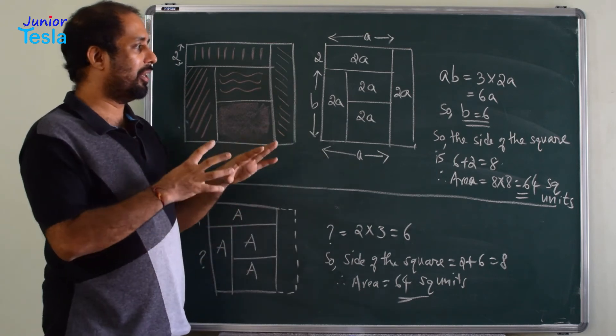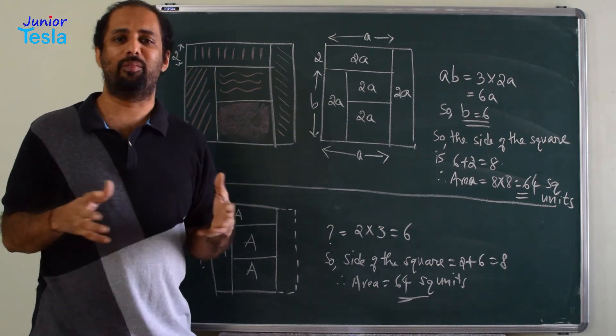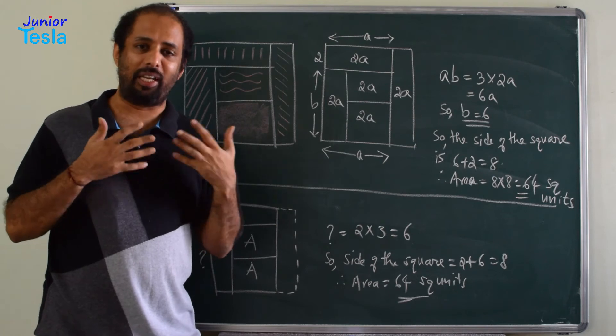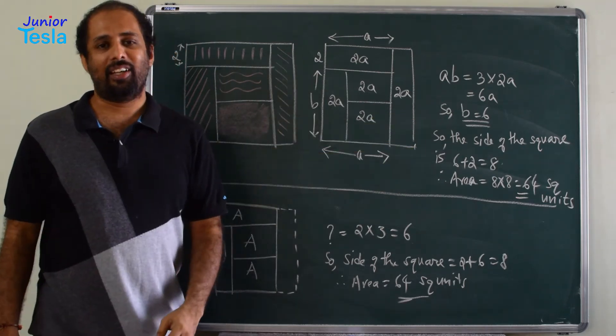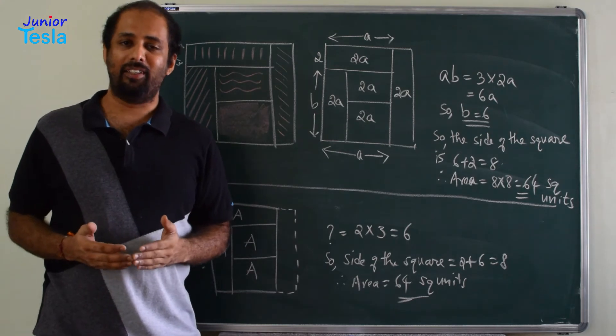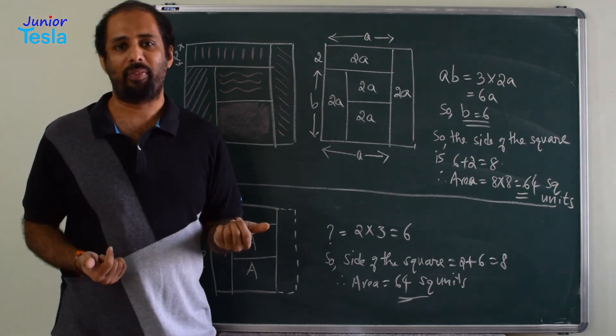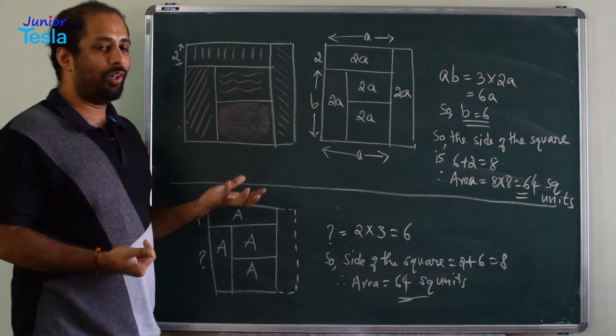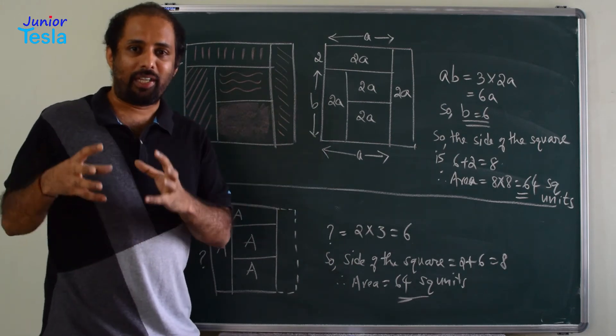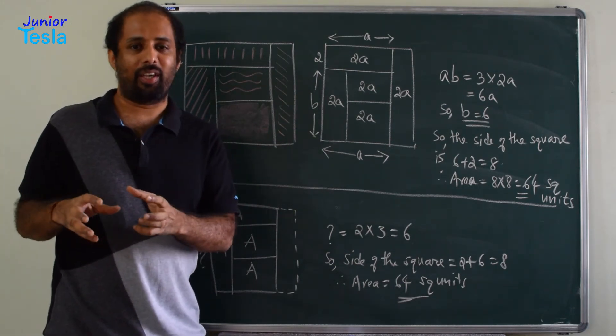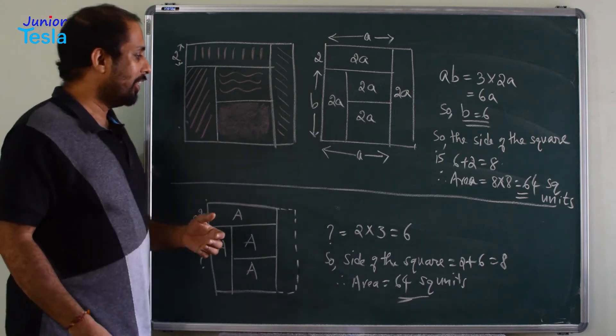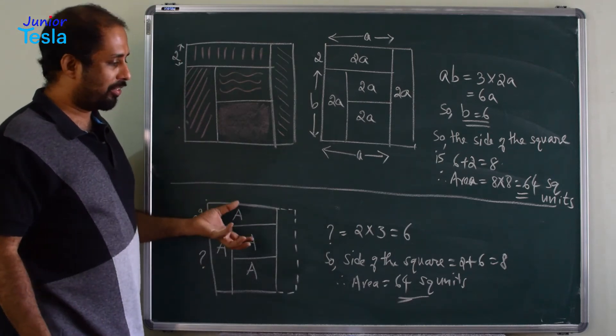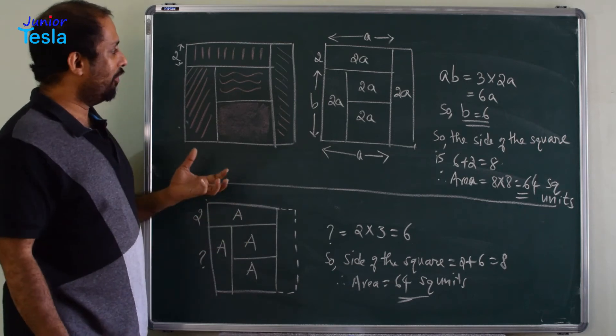So this is one method without any algebra, without any equation, without any comparison. You can straight away get the answer. The length is 8, so the area is 64. Now, as I told you earlier, you spend more time in the details, in the statement, in the words or in the diagram that is given, you will be able to arrive at the solution more quickly. I will tell you why.